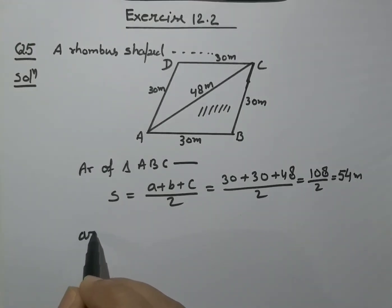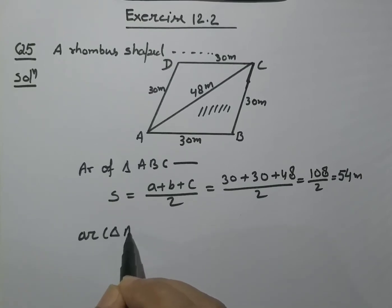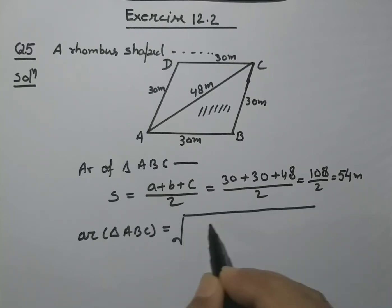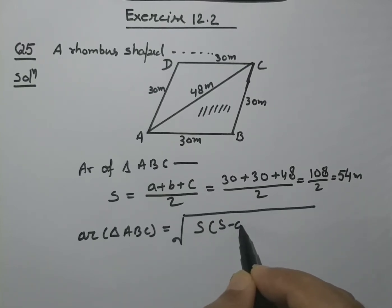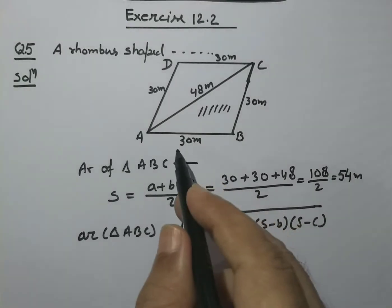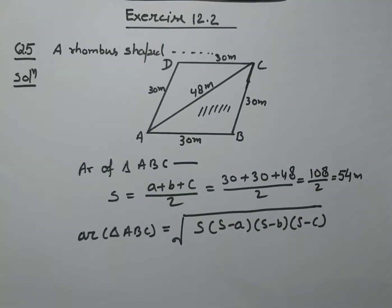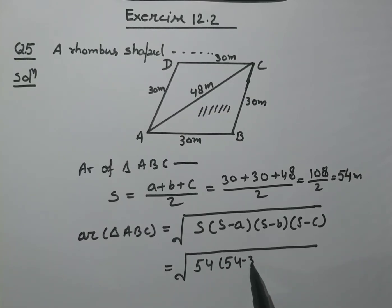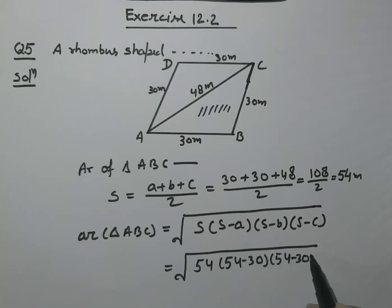Area of triangle ABC = √(s × (s−a) × (s−b) × (s−c)). We have taken one side as a, one as b, and one as c. Now we put the values: s = 54, so it becomes √(54 × (54−30) × (54−30) × (54−48)).